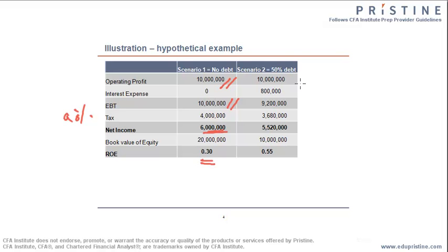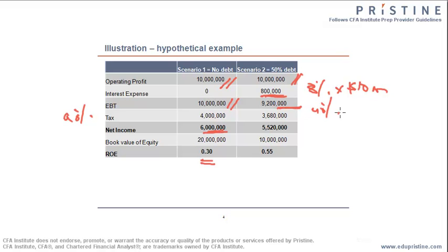In the second scenario, where the firm has issued 50% of its capital as debt, the operating profit is 10 million. Interest expense on the debt is 8% on the outstanding debt of 10 million, which comes to 800,000. The earnings before tax would be operating profit minus interest expense, which equals 9.2 million. A 40% tax on that results in 3.68 million as tax. Subtracting tax from EBT gives a net income of 5.52 million. Notice how net income is less in the second case because of the additional debt burden, which translates into additional interest expense.